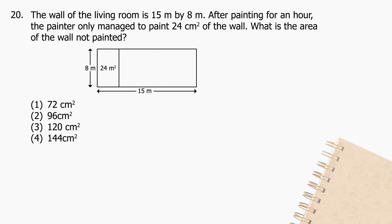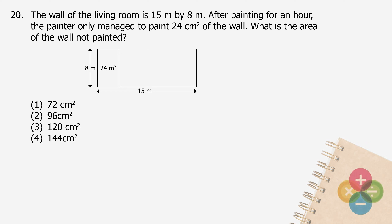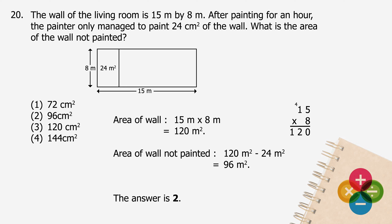Question 20: The wall of the living room is 15 meters by 8 meters. After painting for an hour, the painter only managed to paint 24 square meters of the wall. What is the area of the wall not painted? The area of the wall will be 15 meters multiplied by 8 meters, and the product is 120 square meters. The area of wall not painted will be 120 square meters minus 24 square meters, and the difference is 96 square meters. The answer is 2.